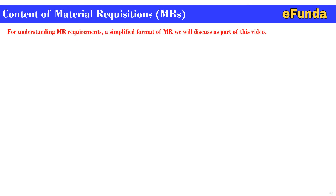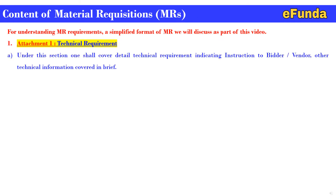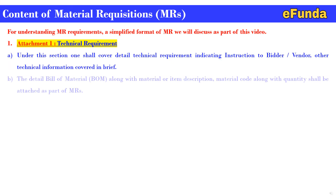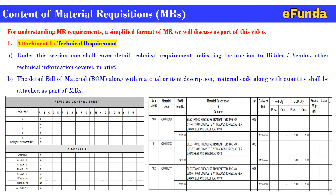Content of material requisition: for understanding MR requirements, a simplified format of MR will be discussed as part of this video. Here we will see Attachment 1, which is the technical requirement. Under this section, one shall cover detailed technical requirements indicating instructions to the bidder or vendor, along with other technical information. The detail bill of material (BOM) along with material or item description, material code, and quantity shall be attached as part of the MR. A typical MR format using a revision control sheet is shown, where attachments are listed on the left-hand side.